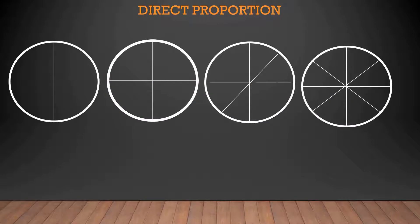The first topic is direct proportion. We can see 4 circles where the first circle is divided into 2 parts, the second circle is divided into 4 parts, the third circle is divided into 6 parts, and the fourth circle is divided into 8 parts. Let the first circle be A, second is B, third circle is C, and the fourth circle be D.